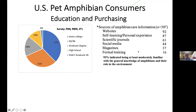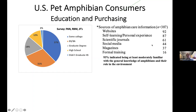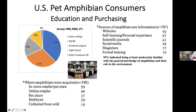Shifting gears to consumers — I want to preface this by noting the survey went out to members of the Pet Advocacy Network, Reptiles by Mac, and Josh's Frogs, which may not represent amphibian consumers broadly across the United States. In general, consumers were fairly well-educated — some with college, bachelor's, or graduate degrees — potentially trained or skilled. I was really surprised to see where they get their information: websites are up there, but some individuals are actually reading scientific journals. Most acquired their amphibians from pet stores, followed by online retailers, a few from hobbyists and pet shows, and interestingly some collect them from the wild.